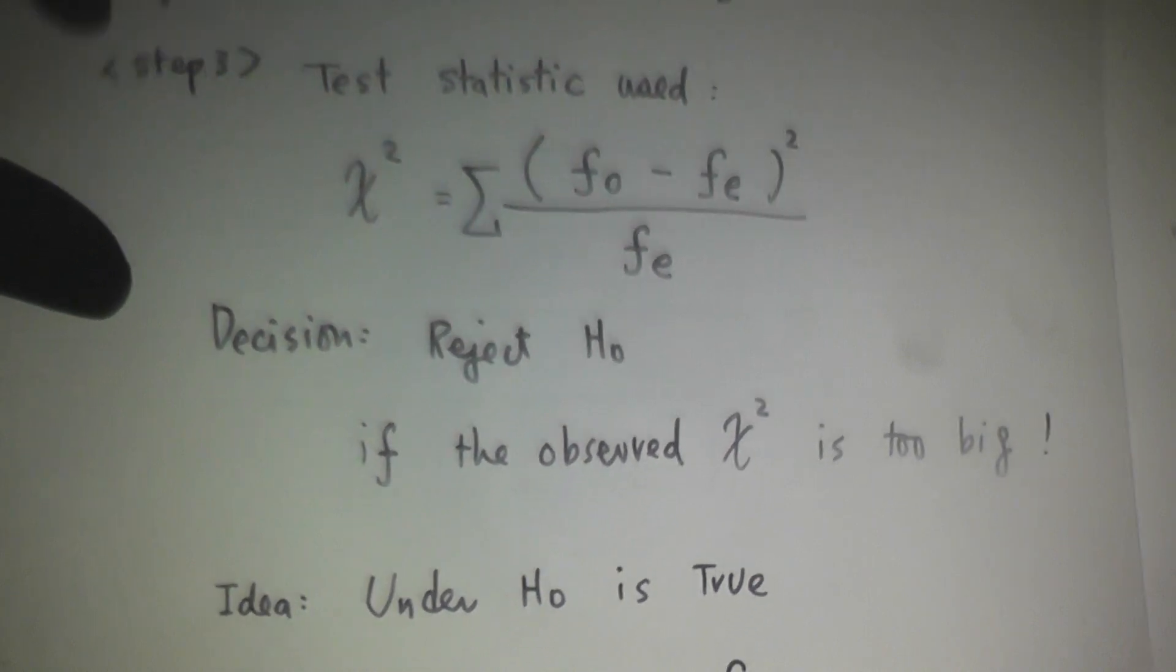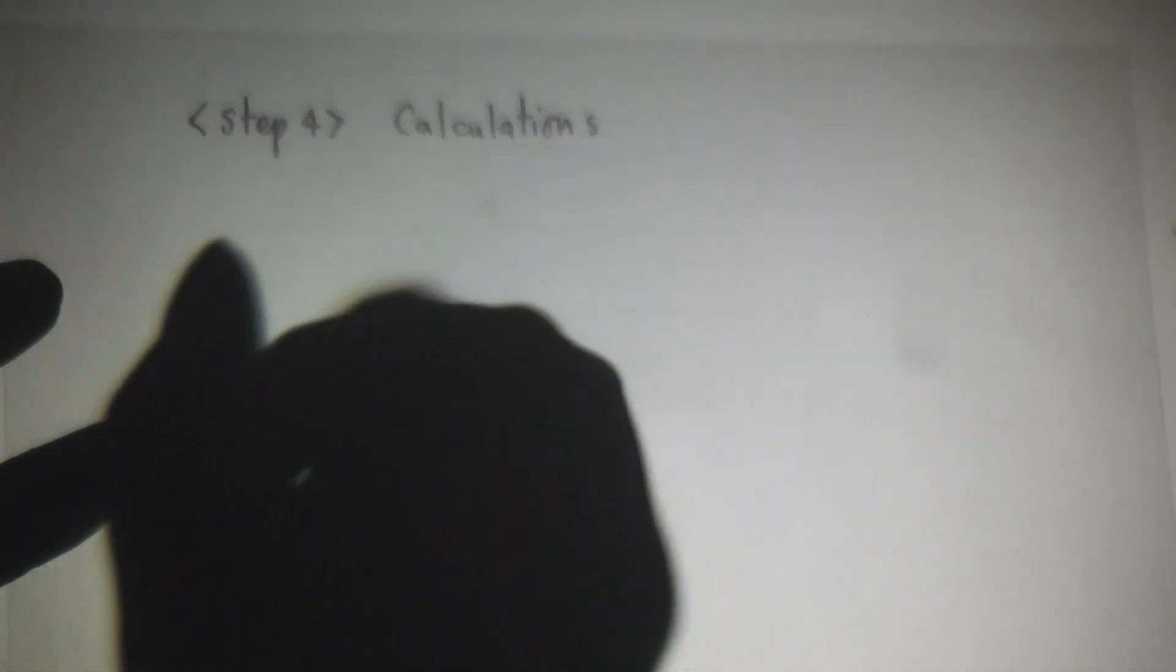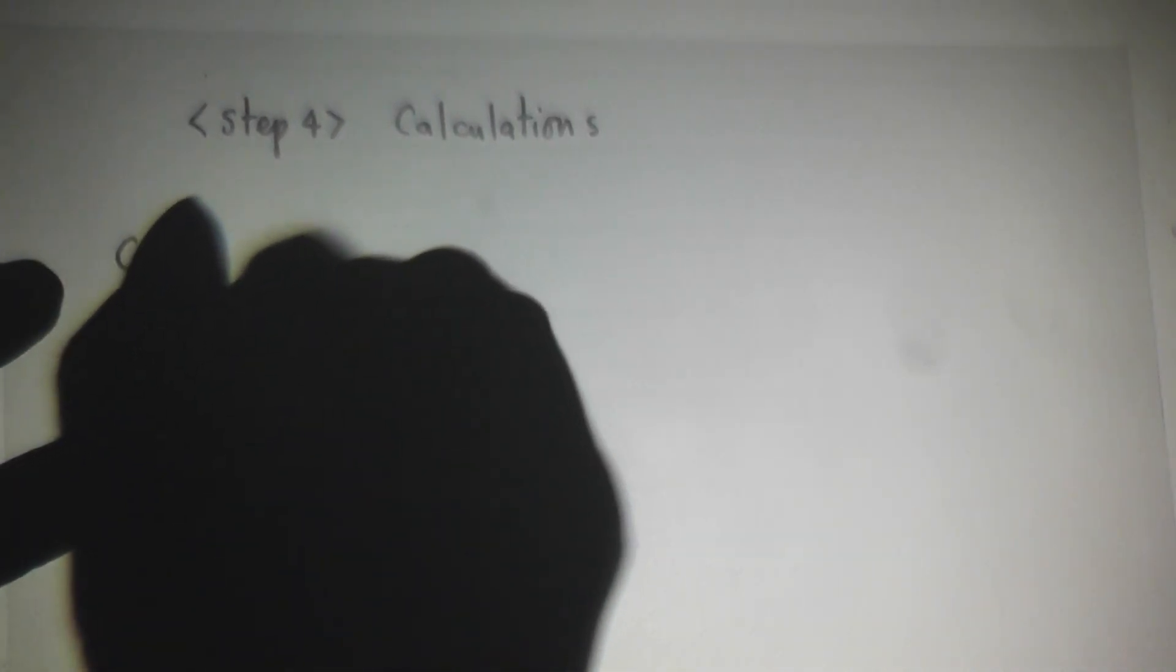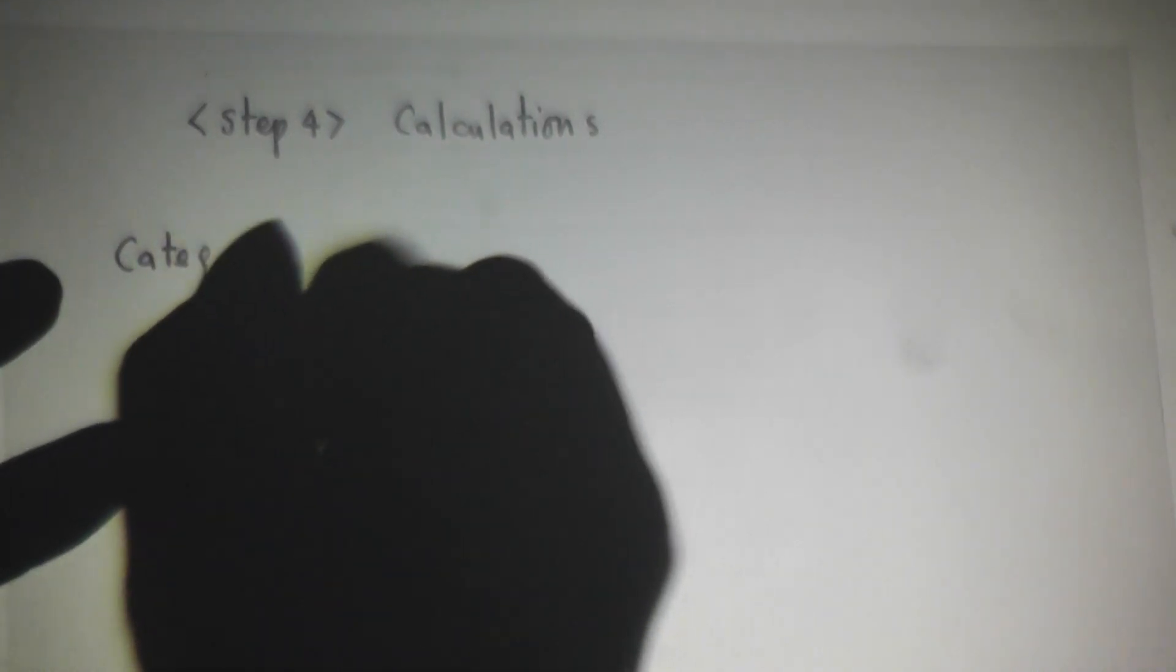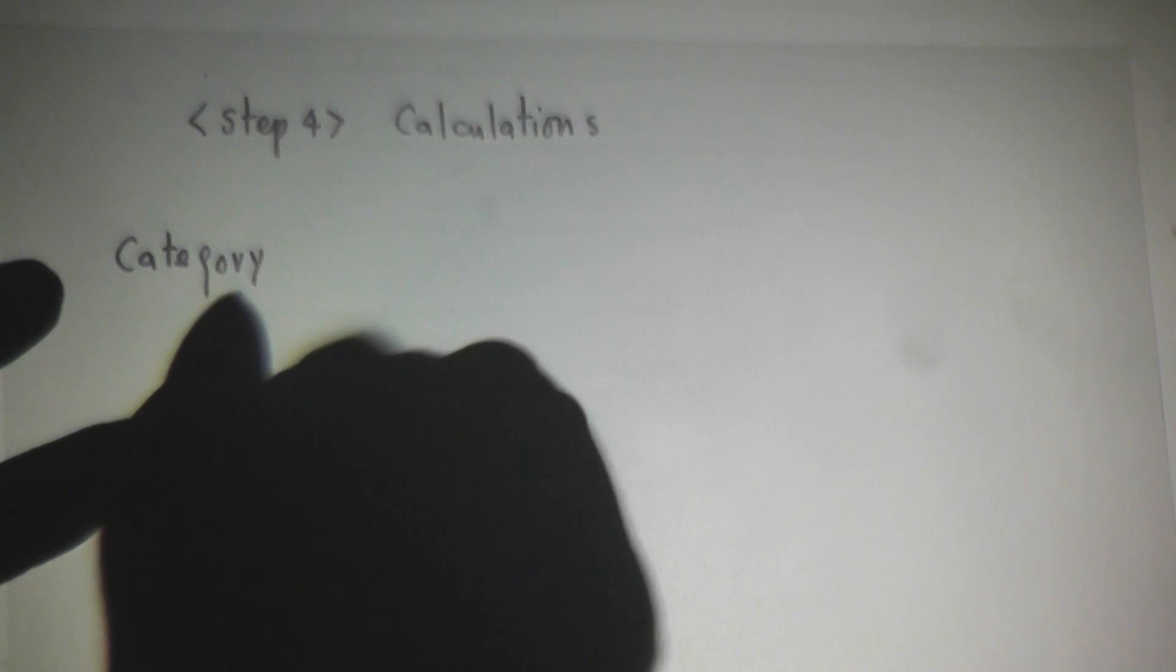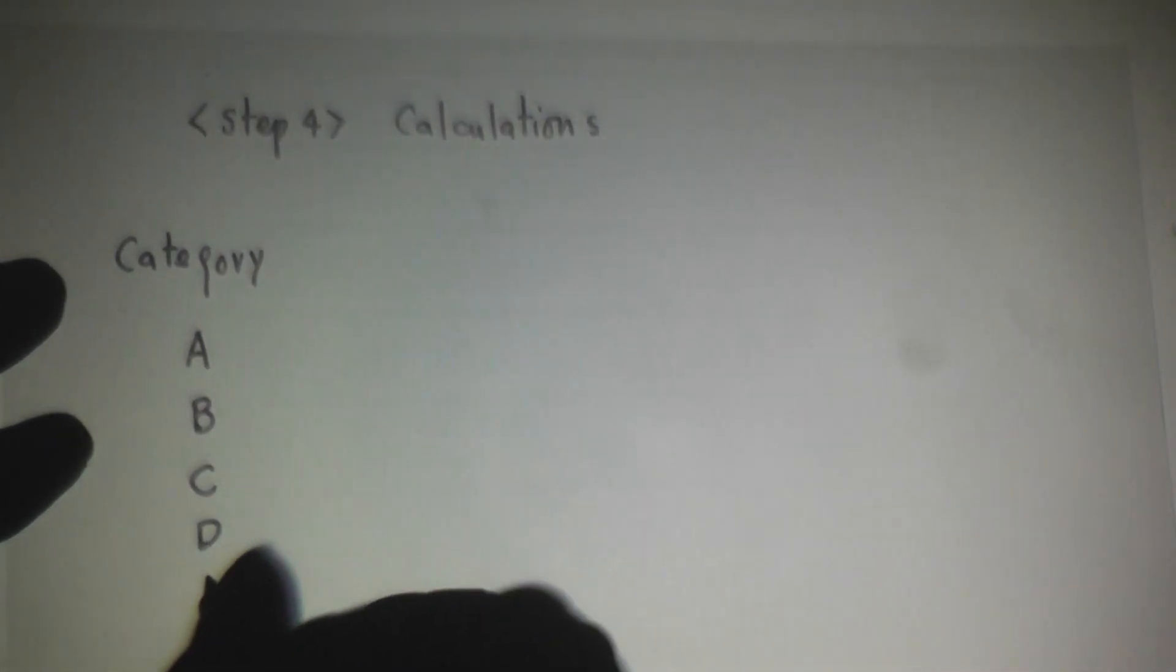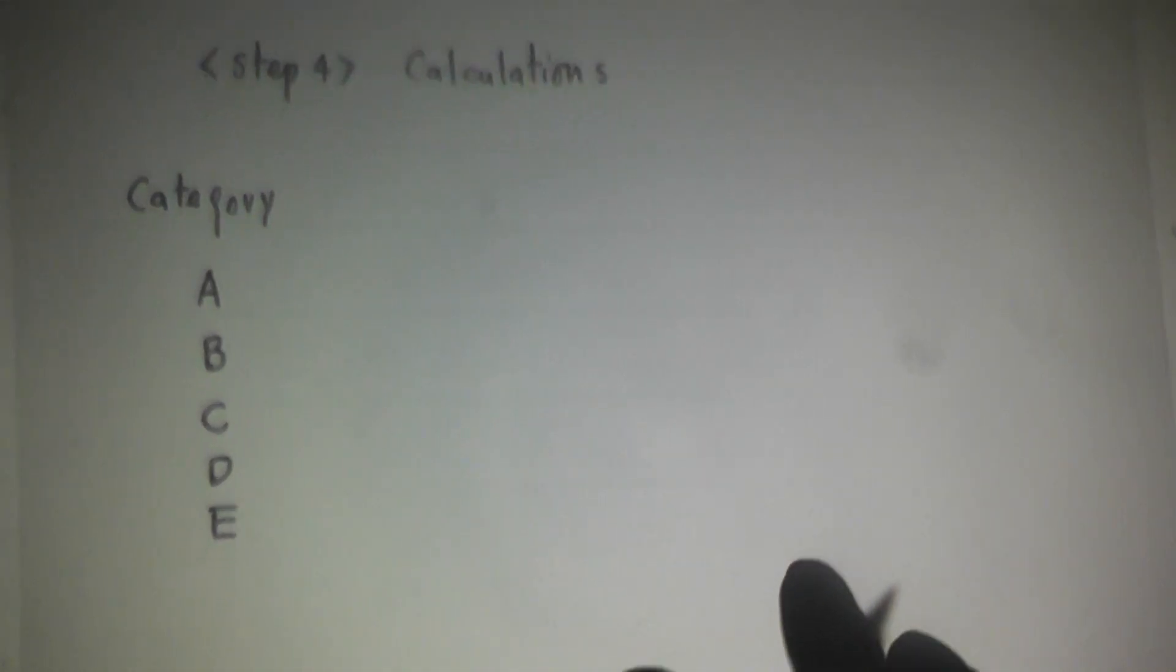Step four, calculations. Here the calculation can be summarized as a big table. Begin with the first column: Category. We have five different categories, A, B, C, D, and E. Five categories.